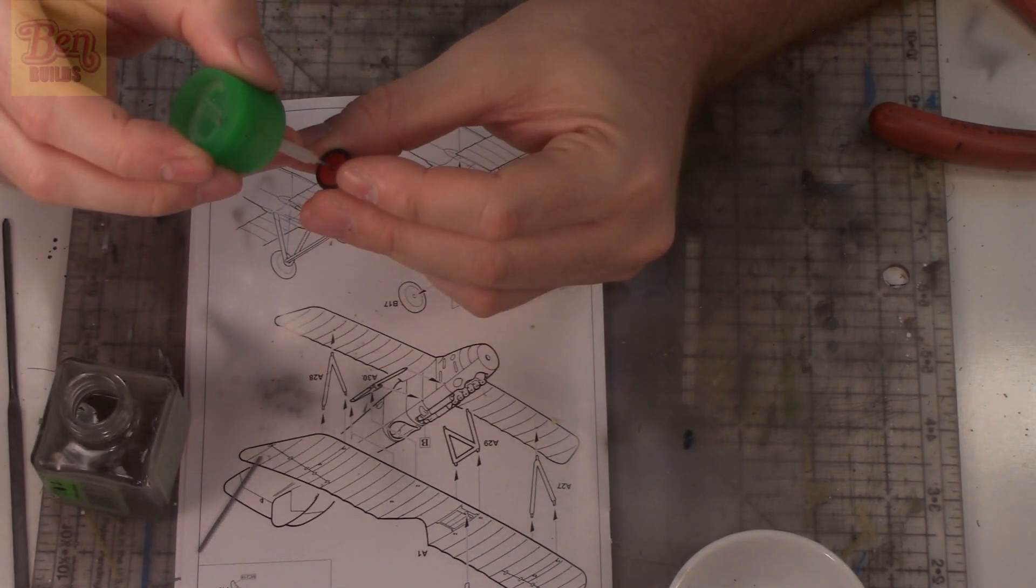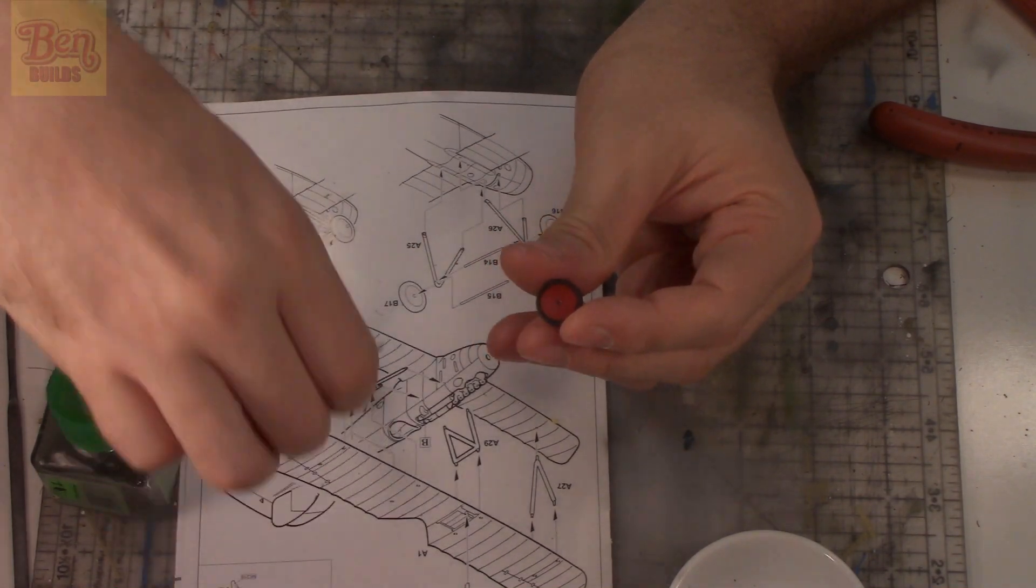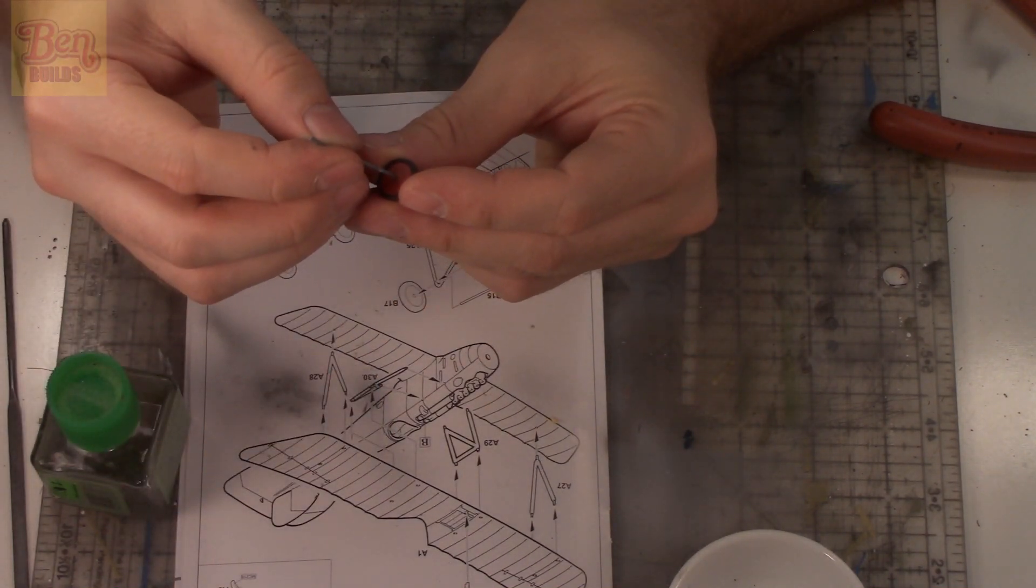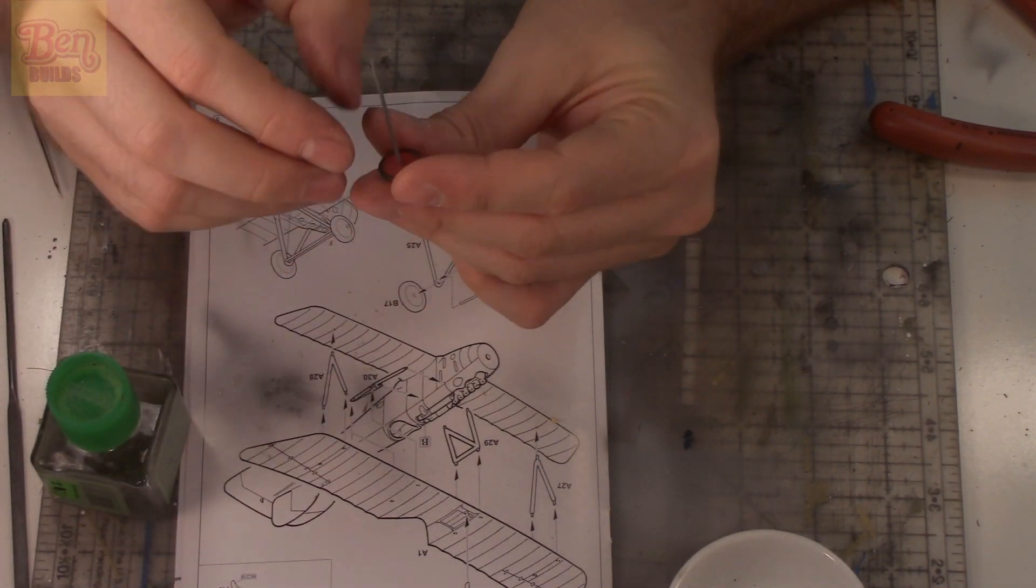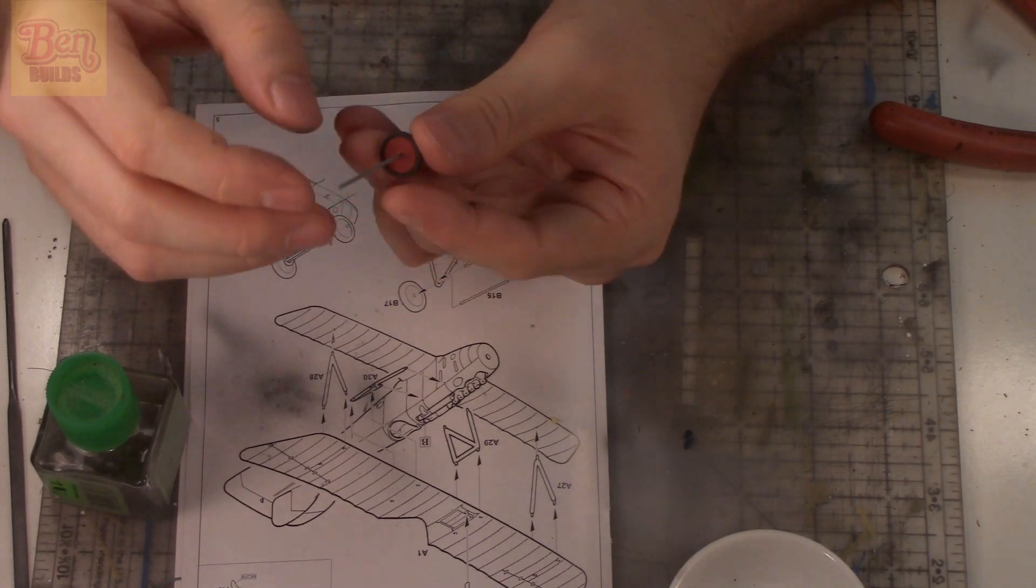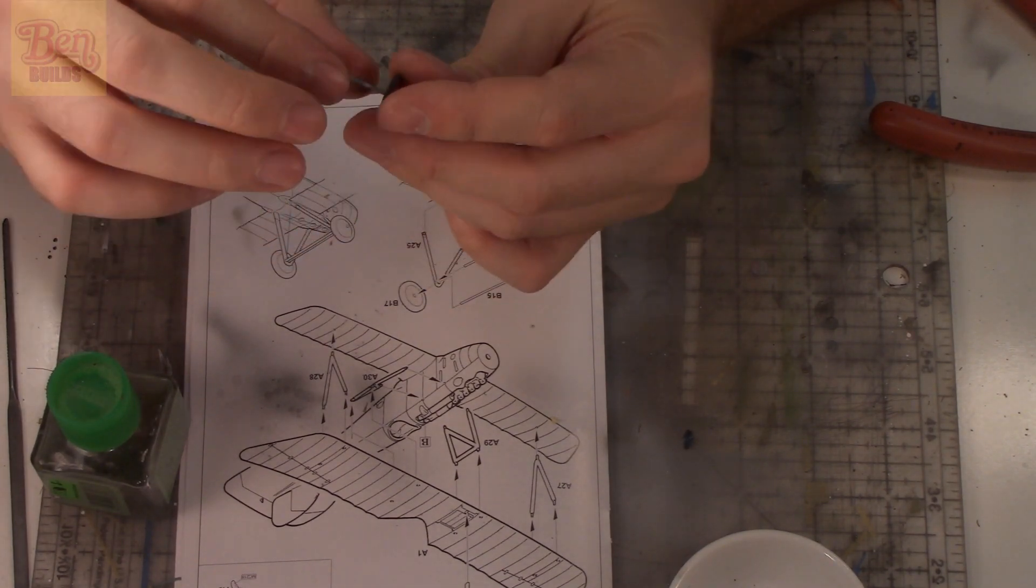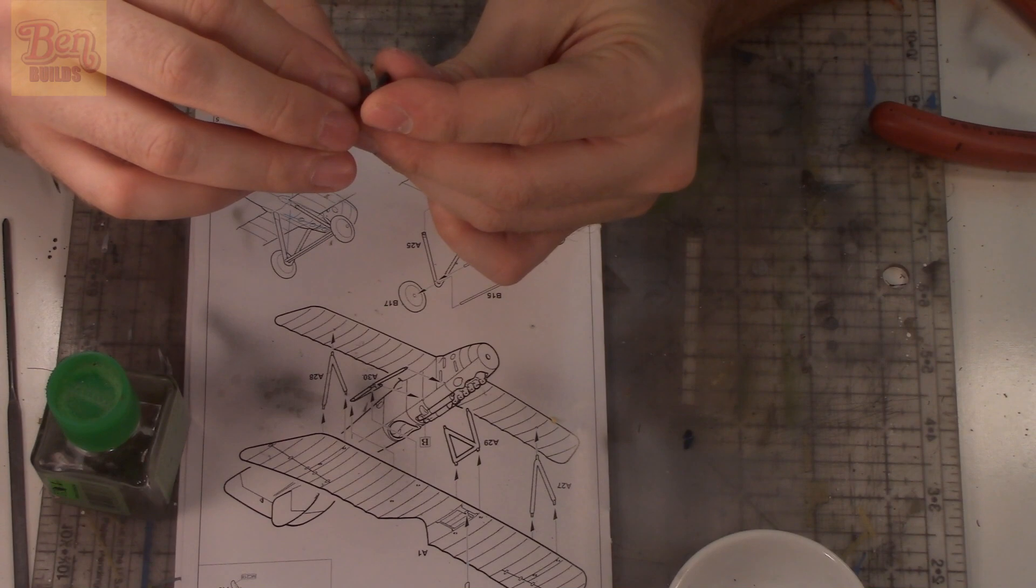I'm using my Tamiya extra thin cement. I'll drop a little bit in the center wheel and install this axle in the middle with a little pressure. This thing should solidify - it's already very tacky. I'm going to set this aside.